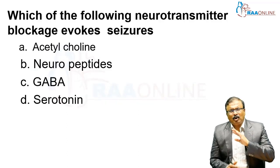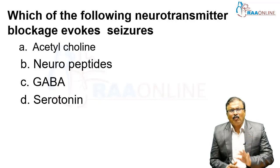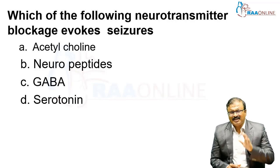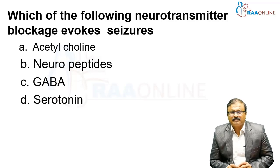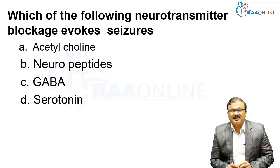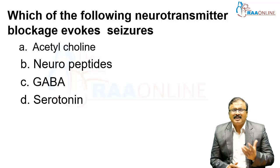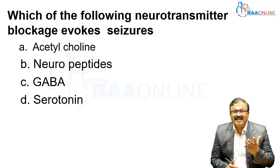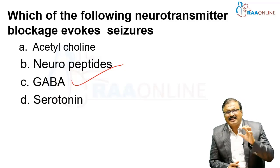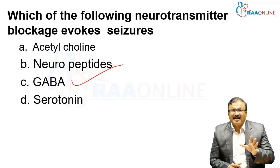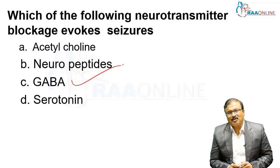Which of the following neurotransmitter blockages evokes seizure? The question is simple — which transmitter is responsible for seizures? The answer is GABA. This is the neurochemical transmitter which has to be targeted to prevent seizure episodes.